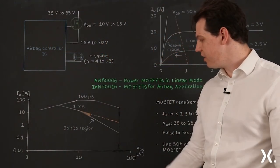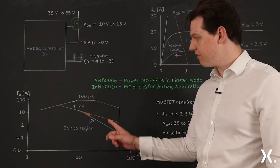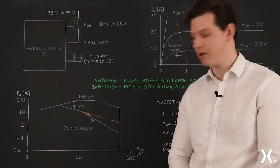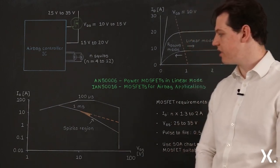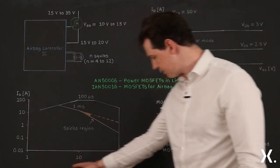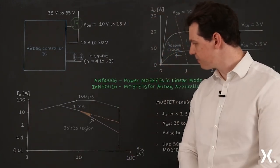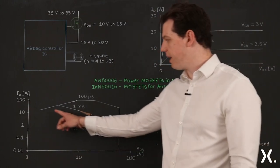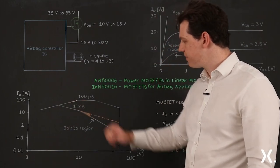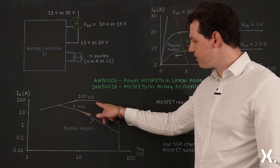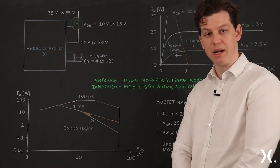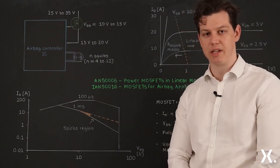You can use the SOA or safe operating area chart to determine whether a MOSFET is suitable to be used in a pulsed linear mode application. Again we've got drain current on the y-axis and drain source voltage on the x-axis and plotted on the chart we've got the maximum safe drain current at different voltages. At this point here you reach what's called the constant power line which is the maximum amount of power that can be dissipated by the MOSFET.